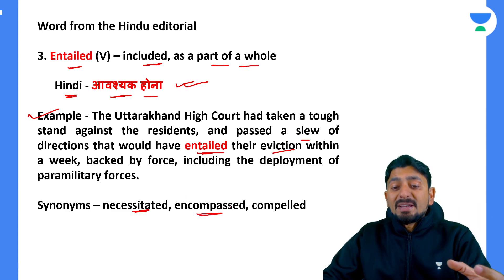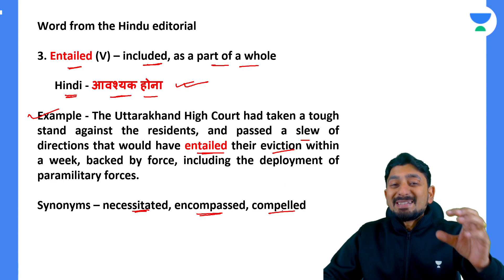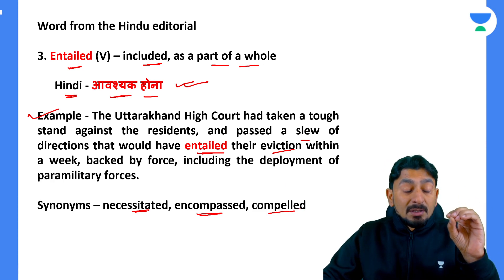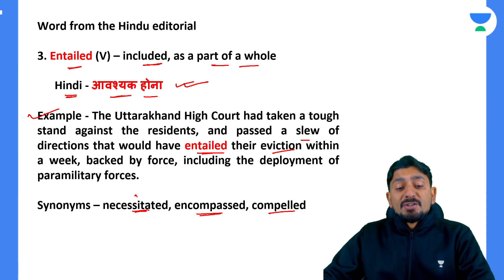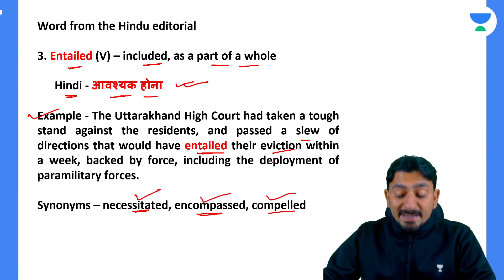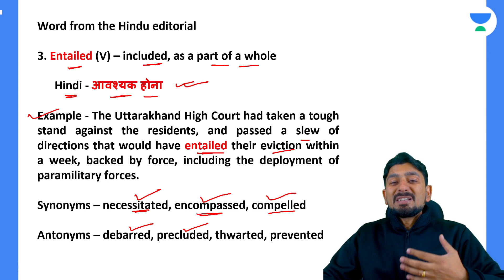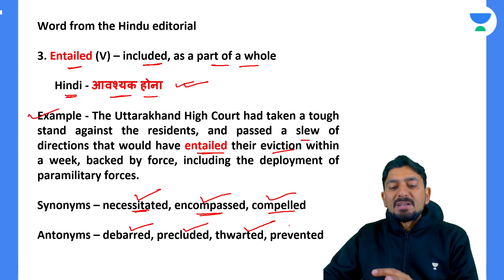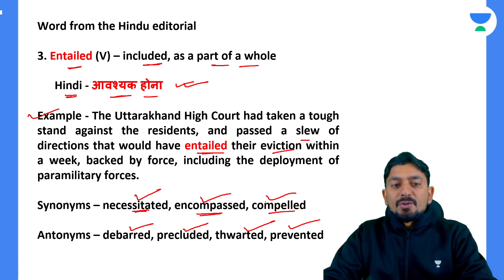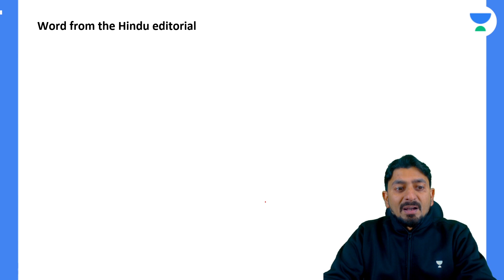Encompassed also means something is necessarily part of something. Compelled — forcing something to happen — and necessitated are all synonyms of entailed. Antonyms of entailed: debarred, precluded (means prevented), thwarted (means prevented something from happening), and prevented — all meaning 'kisi cheez ko hone se rokna,' to stop something from happening.